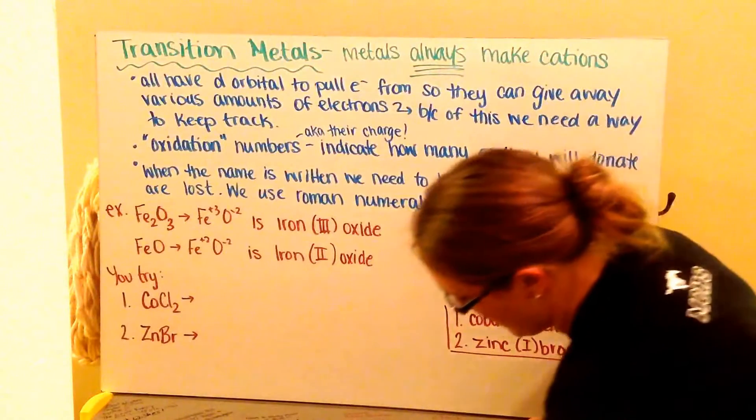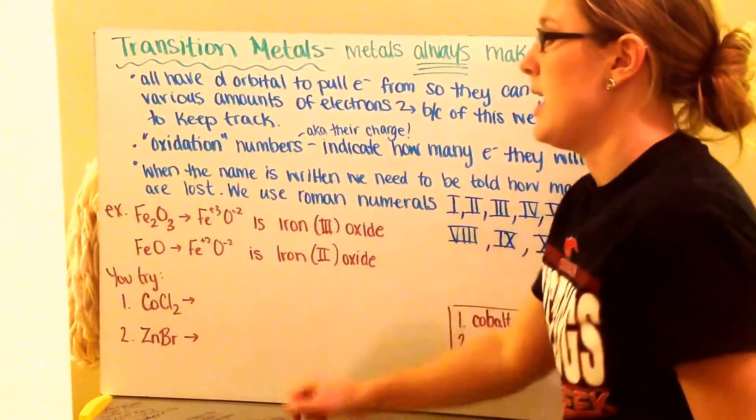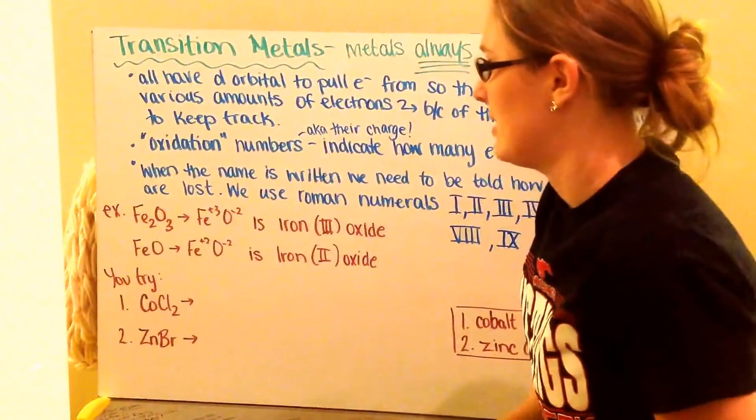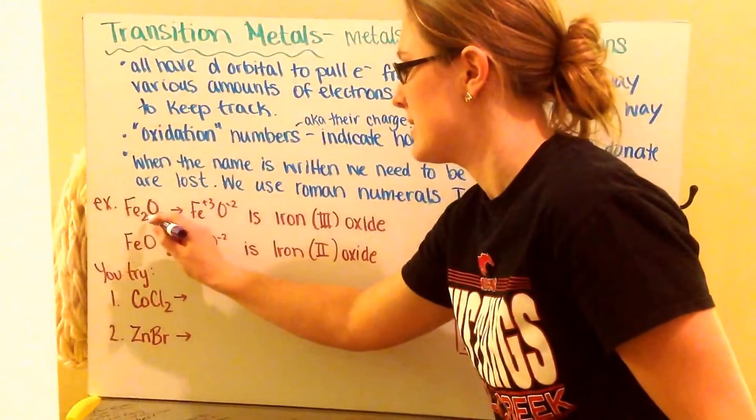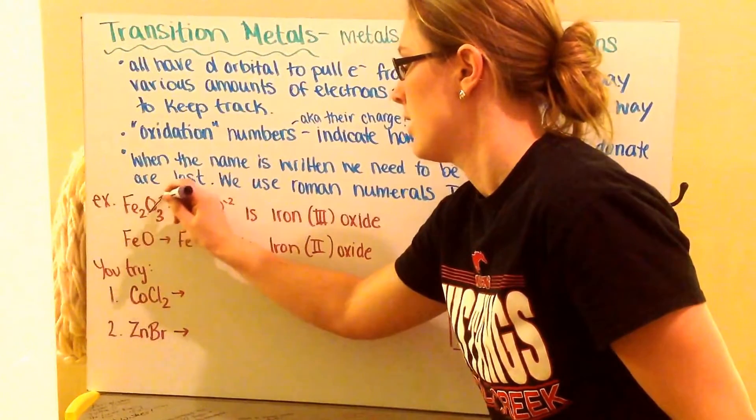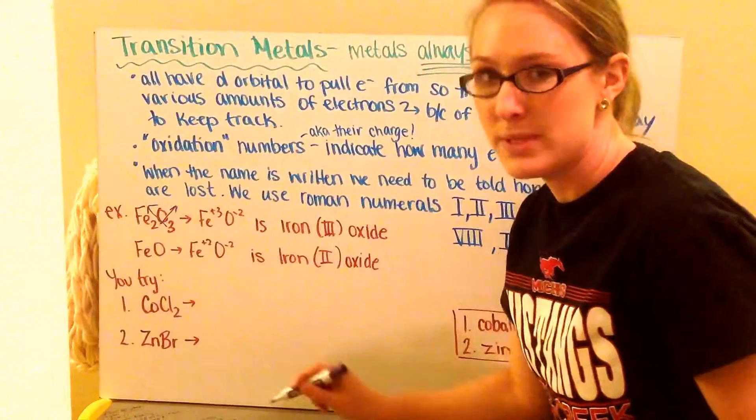So let's put this into practice. So here I have Fe2O3. I have a metal and a non-metal ionic bond. I go ahead and I draw my subscripts back up to figure out what are my charges that I have. By doing that, the opposite of what we did before.